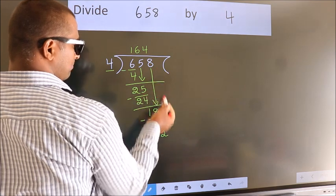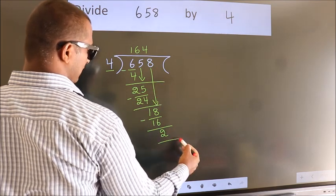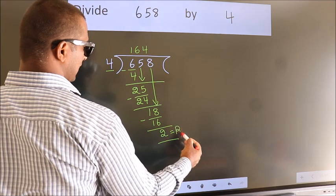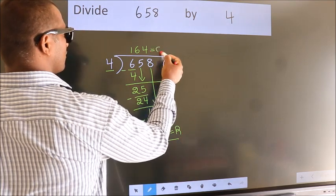No more numbers to bring it down. So we stop here. This is our remainder. This is our quotient.